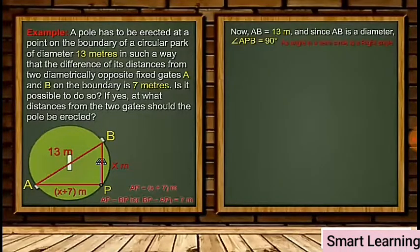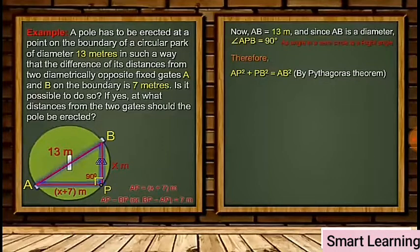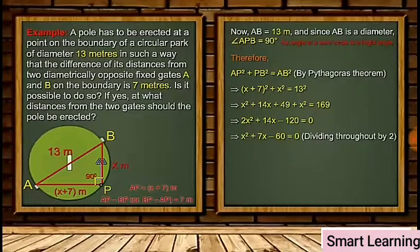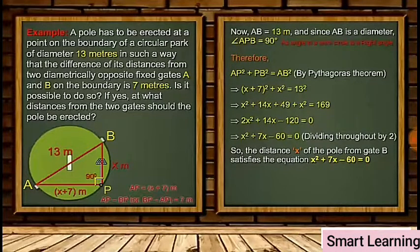Now AB = 13 meters. And since AB is a diameter, angle APB = 90°. Therefore, by Pythagoras theorem, AP² + PB² = AB². This implies (x + 7)² + x² = 13², which gives x² + 14x + 49 + x² = 169. This gives the equation 2x² + 14x - 120 = 0. Dividing throughout by 2, we get x² + 7x - 60 = 0.